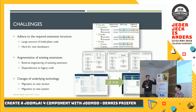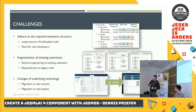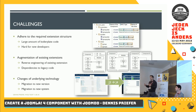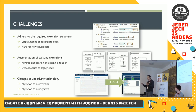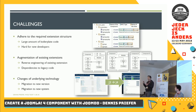One thing we figured out during our development projects over the last decade was that when we had new developers in our team, they had big problems learning the code structure, the file structure Joomla requires for working with the component. You have to learn this, and when you have it, you can use the sophisticated extension mechanism of Joomla. But you have to learn it beforehand, and that's not easy, especially when a new Joomla version comes out.